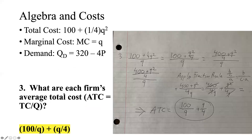Question three is asking: what are each firm's average total costs? Remember, ATC — average total costs — equals total costs divided by quantity. So to start this equation, we have our total costs and we need to divide by quantity. We start by taking 100 plus one-fourth Q squared and dividing it by Q.